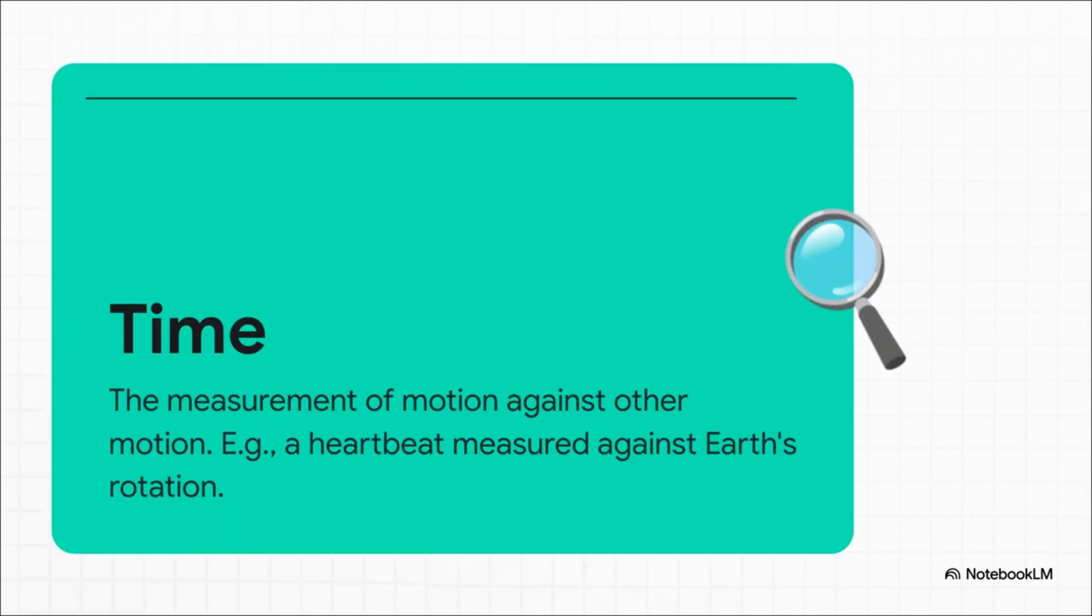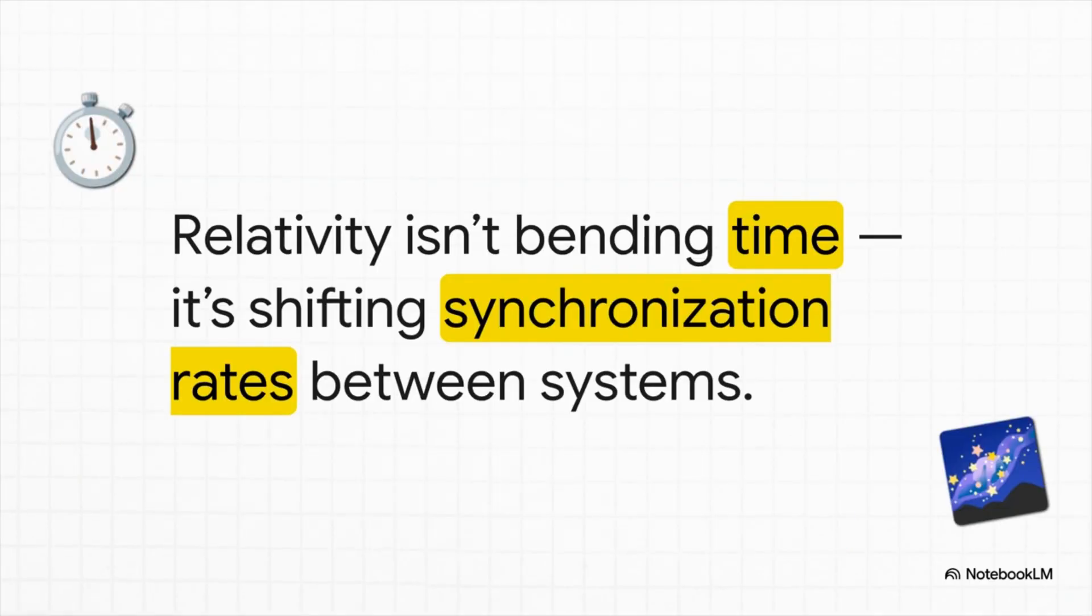So what is it then? Well, according to this, time is just a comparison, a relationship. Think about it: when you measure one second, what are you actually doing? You're not tapping into some universal force. You're just comparing one motion—say, the swing of a pendulum or the vibration of a quartz crystal—to another motion, like how fast the earth is spinning. That's it. It's just motion compared to other motion. There is no river of time.